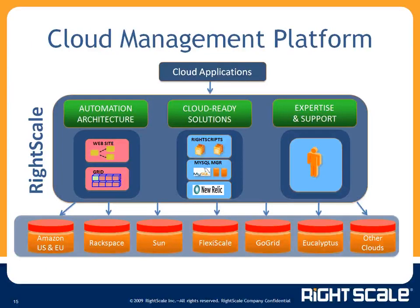The RightScale system is a multi-cloud management platform — supporting public cloud infrastructures like Amazon Web Services, Rackspace, and Sun, as well as Eucalyptus for private clouds. We provide a level of abstraction so customers can easily bridge the gap between the applications they want to run and the cloud infrastructures — public or private — being provided to them.